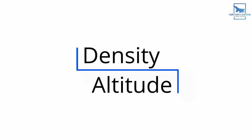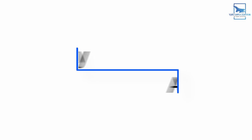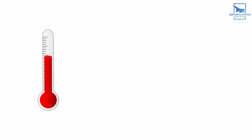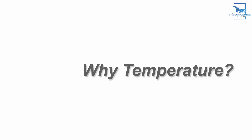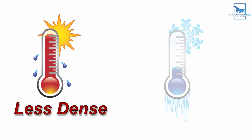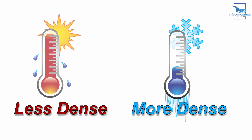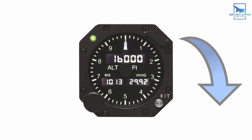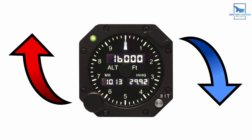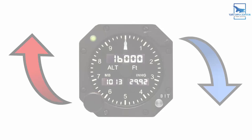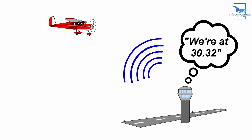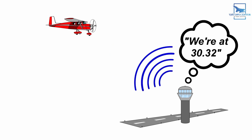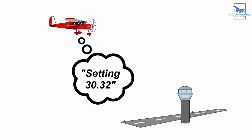The way you compensate for these changes is with density altitude, which is just pressure altitude corrected for variations from standard temperature. Temperature changes what the altimeter reads since warm air is less dense than cooler air — to the altimeter, that change in density from temperature looks exactly the same as a change in altitude. To compensate for this variance, you'll typically hear airports broadcast their current pressure levels over the radio, and pilots can then adjust their altimeters to match that local pressure.